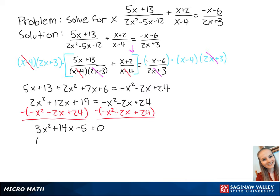We can factor out the left side to become 3x minus 1 times x plus 5, which is equal to 0. Now we have the equations 3x minus 1 equals 0, or x plus 5 equals 0.